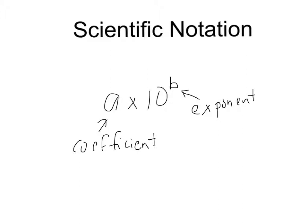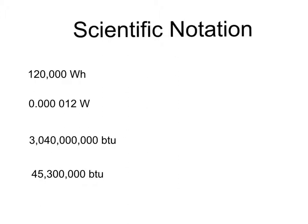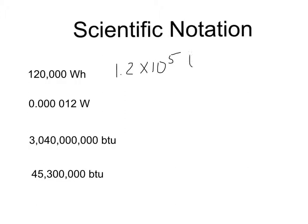Let's just do a couple of examples. Here are a few quantities. To convert to scientific notation, you have to find the decimal. In this case, the first one is 120,000 watt-hours — the decimal is implied at the end. You simply count the number of decimal places you have to move until there's only one non-zero number to the left of the decimal point. We move the decimal over between the one and the two — one, two, three, four, five places — so it's 1.2 times 10 to the fifth watt-hours.